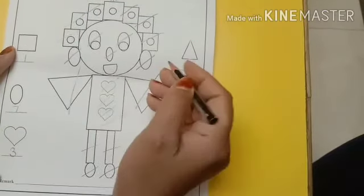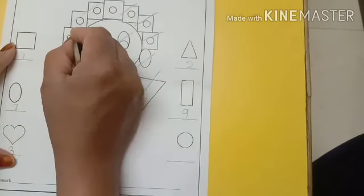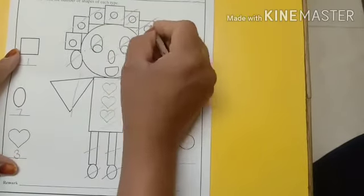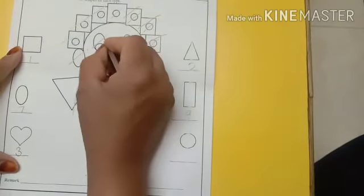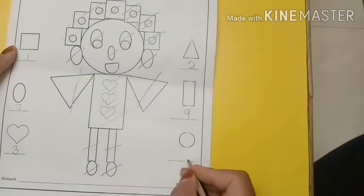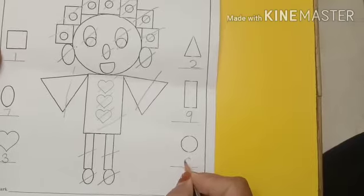And what about the circles? Come on, let us count the circles. One, two, three, four, five, six, seven, eight, nine. So there are nine circles.